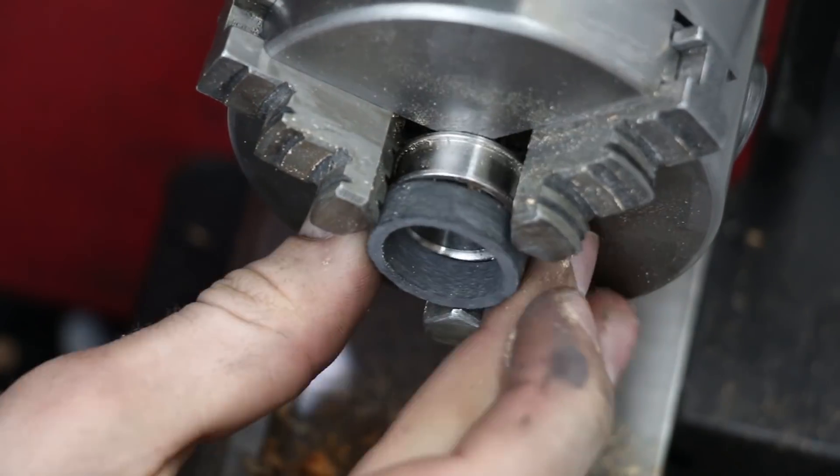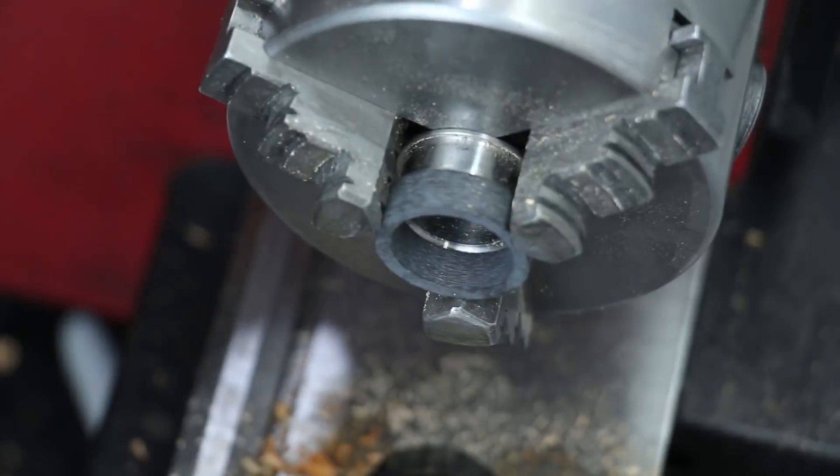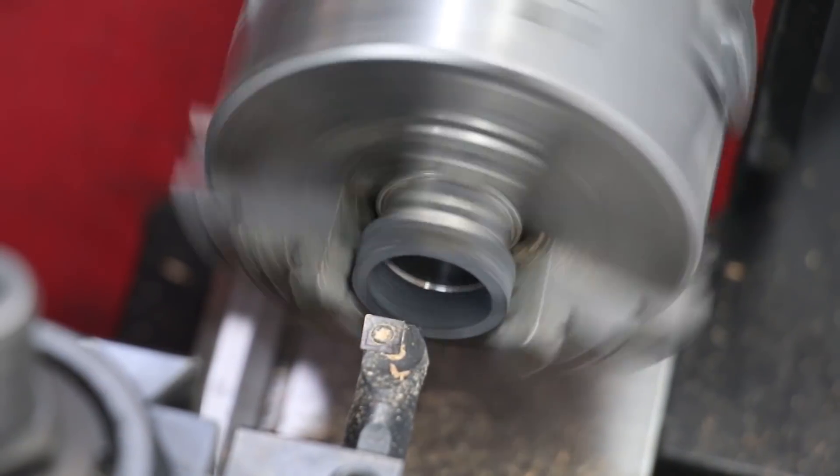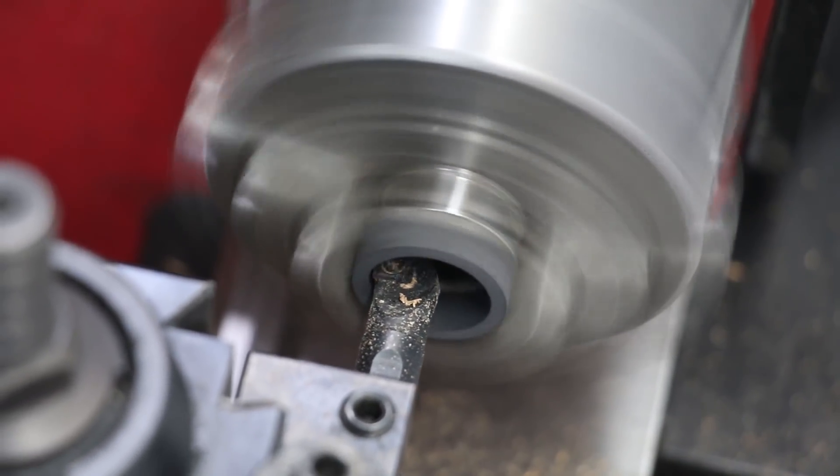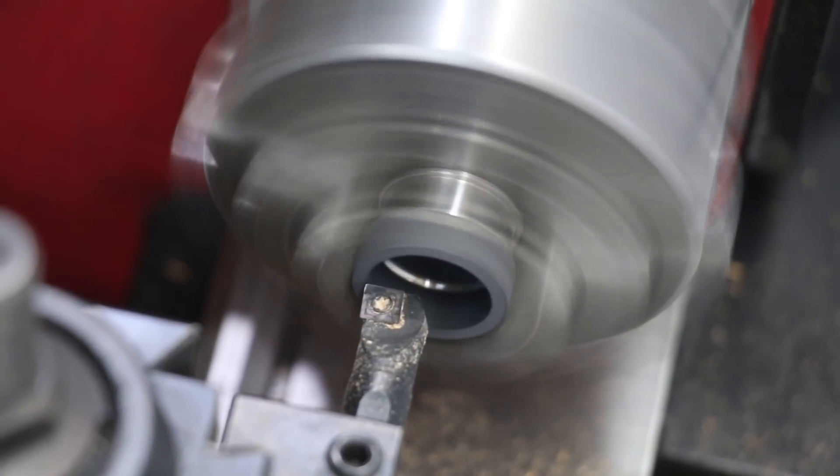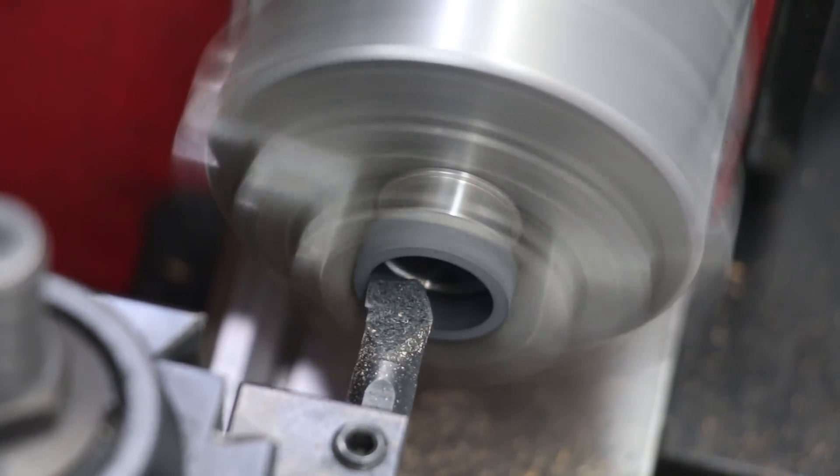Now we need to put the carbon fiber in the lathe jaws and we need to do a similar process. I'm going to be hollowing it out slightly. Now it's very close to the final dimensions that I was going for. So I'm being careful. I'm doing very light passes and measuring in between. And after three or four passes, I've got it exactly where I want it.